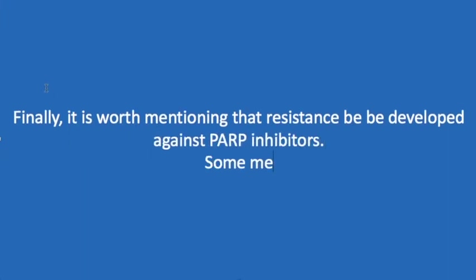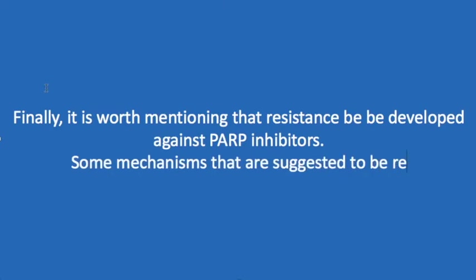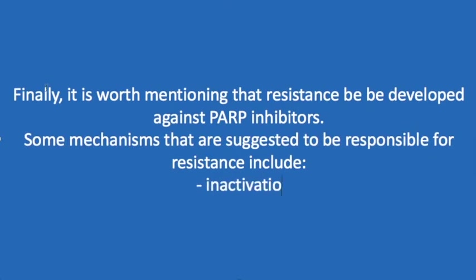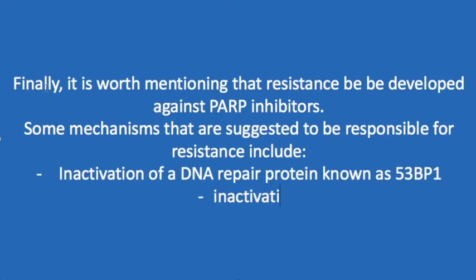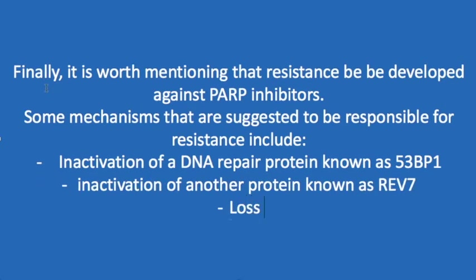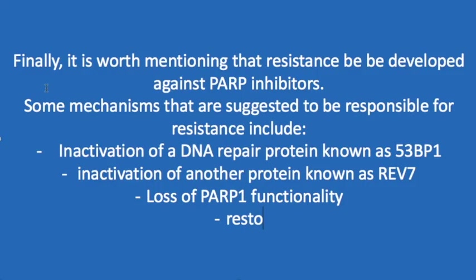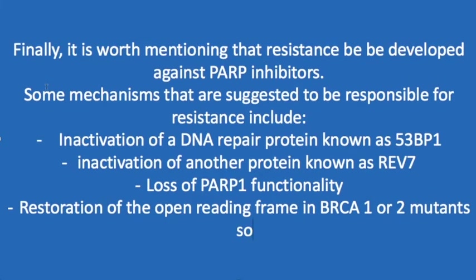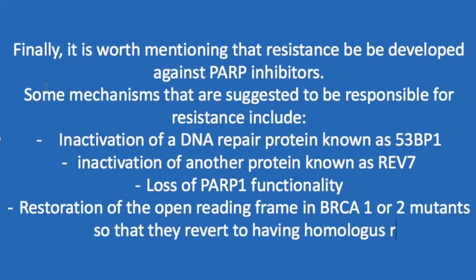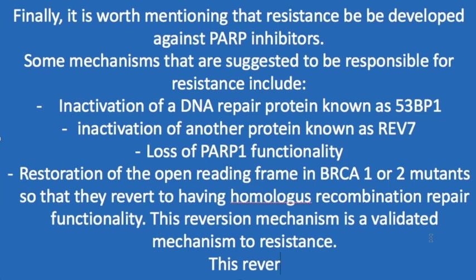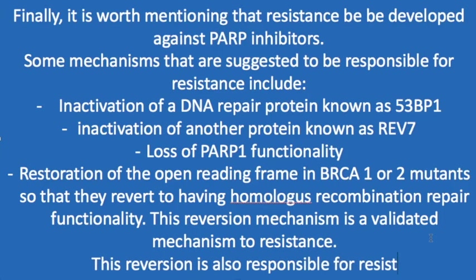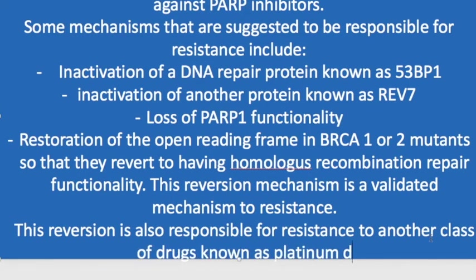It is worth noting that resistance can occur to PARP inhibition. Suggested mechanisms include inactivation of another DNA repair protein known as 53BP1, or inactivation of another protein called REV7. Loss of PARP1 functionality would also render PARP inhibitors ineffective. One validated pathway of resistance is restoration of an open reading frame in BRCA1 and 2 mutants, so they revert to having homologous recombination functionality. This mode of resistance also causes resistance to platinum drugs such as cisplatin.